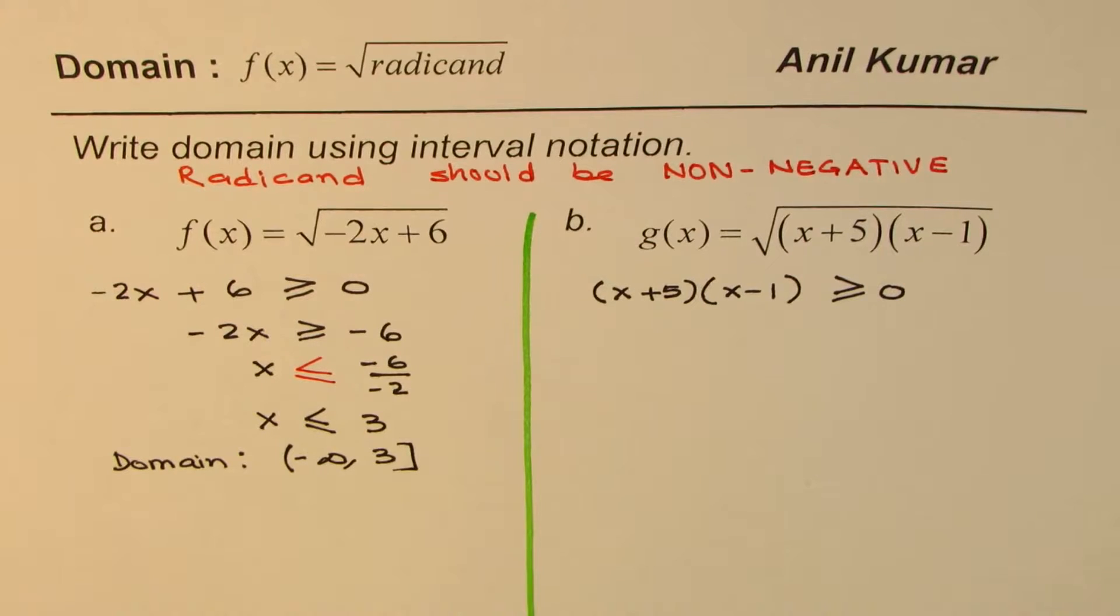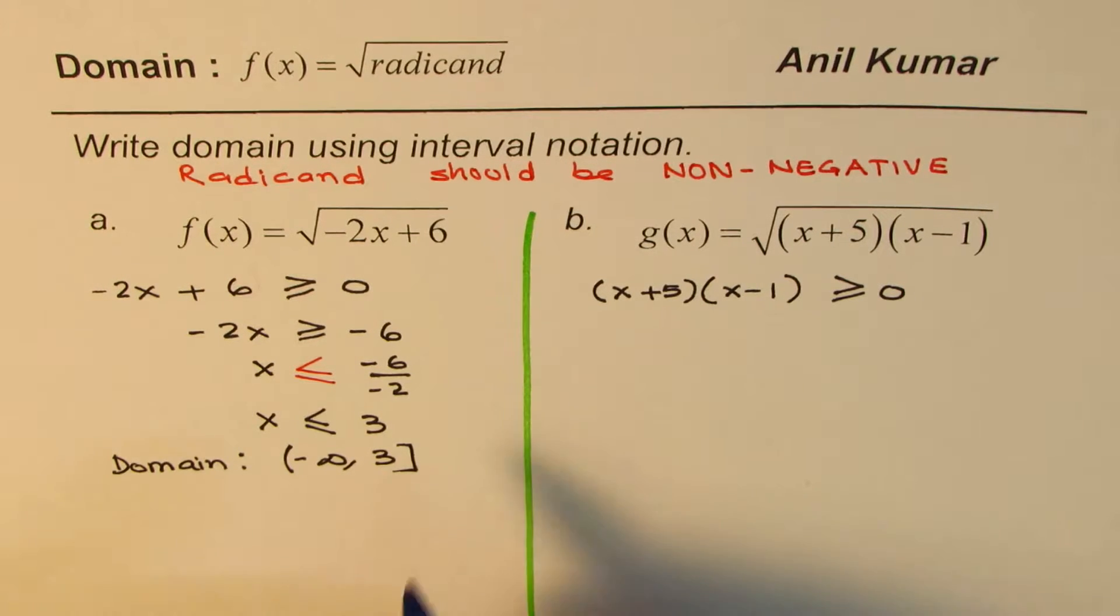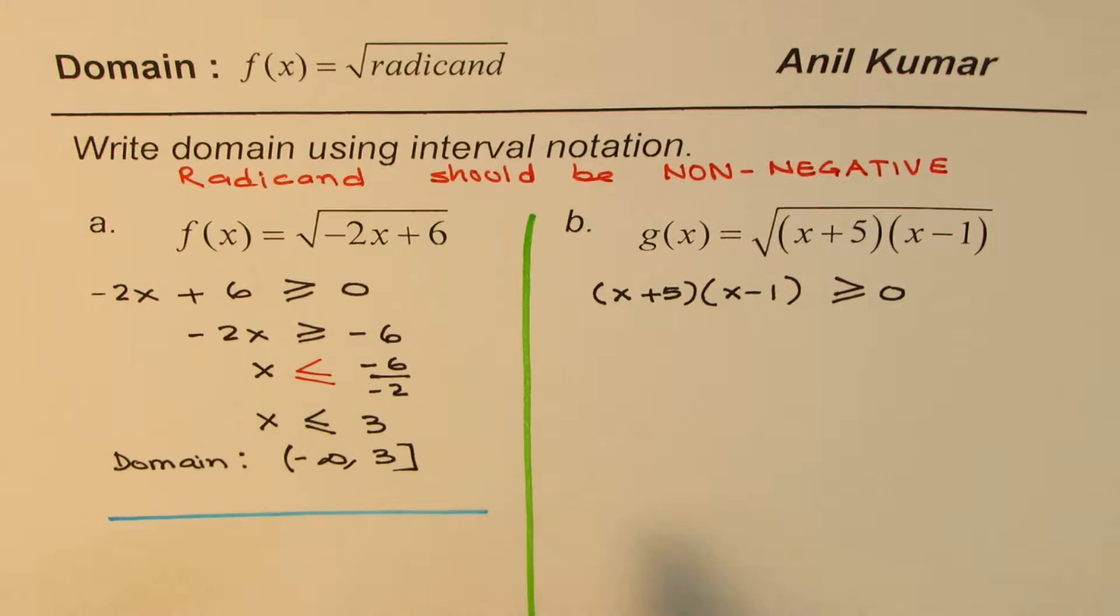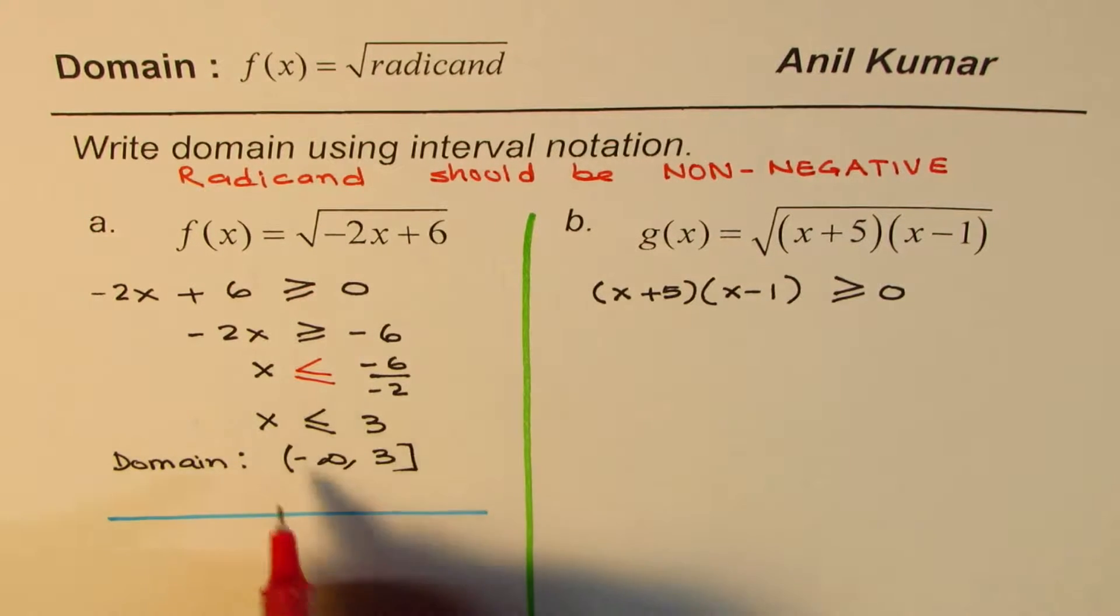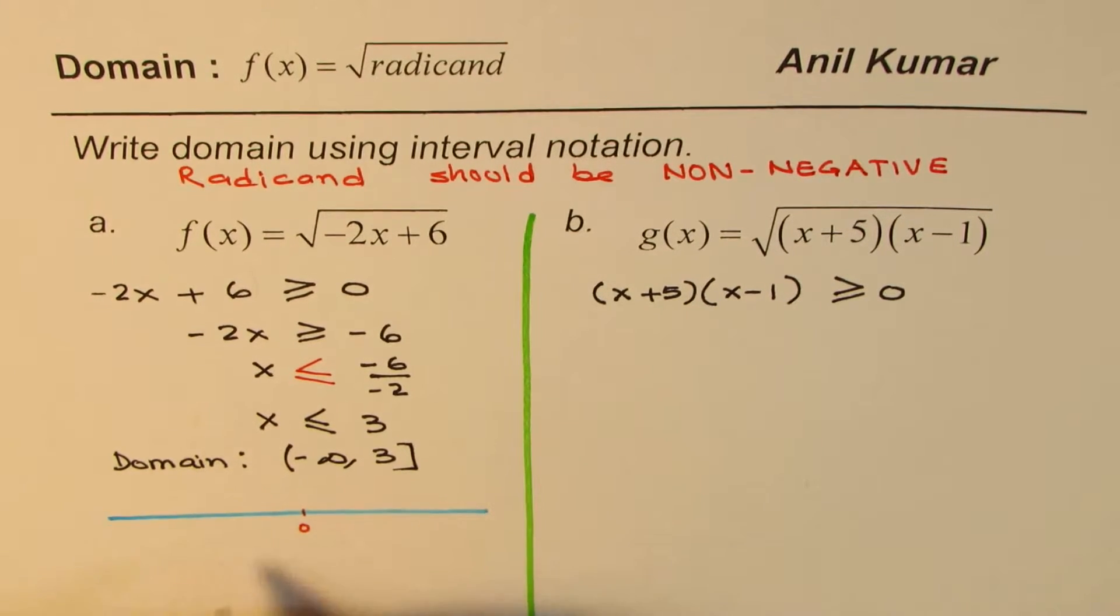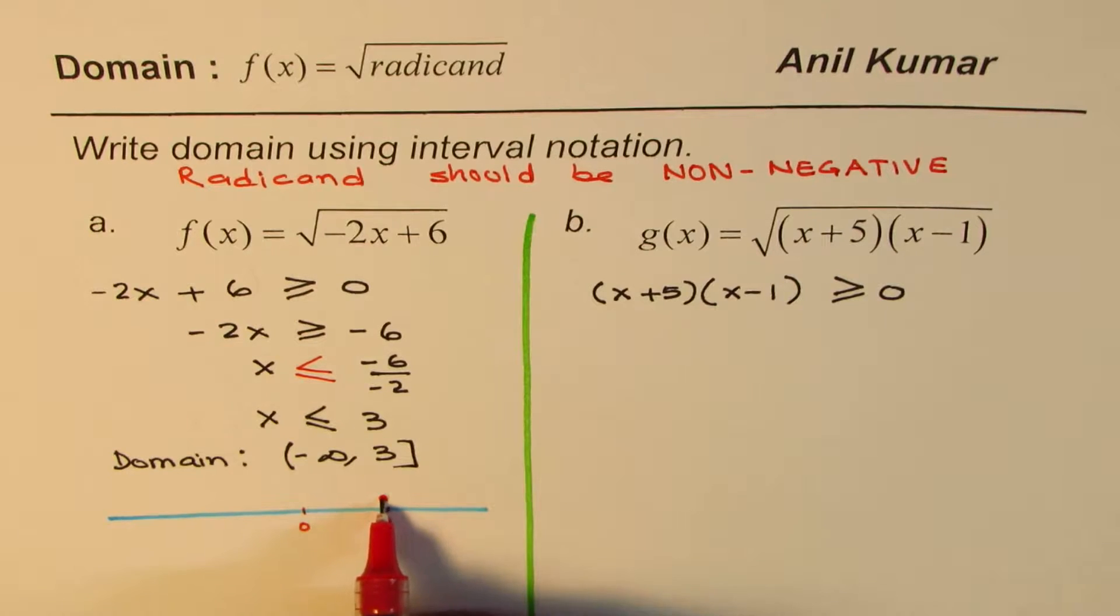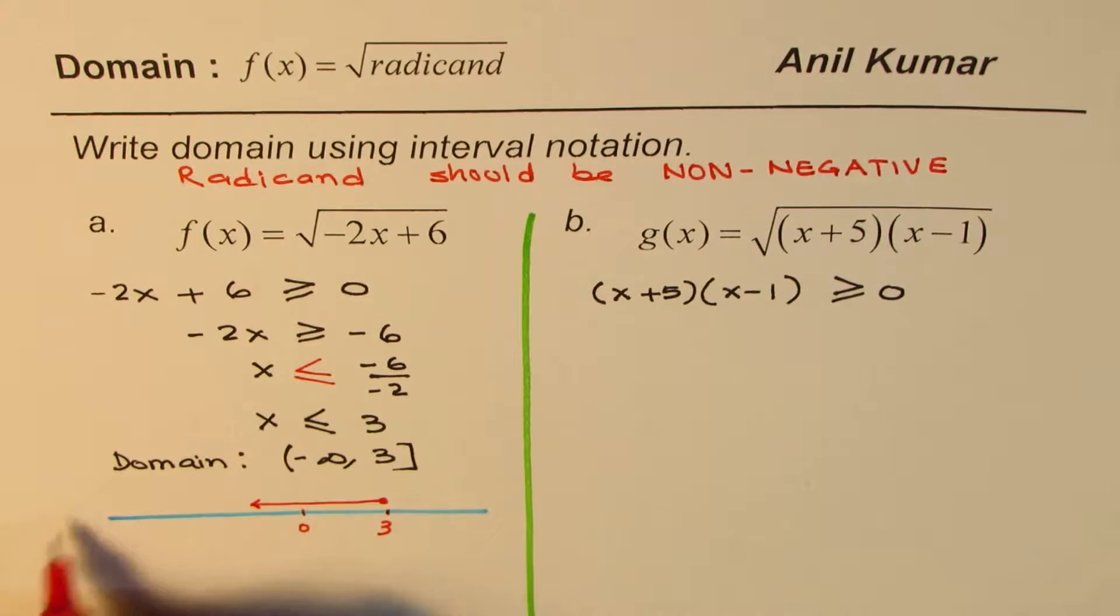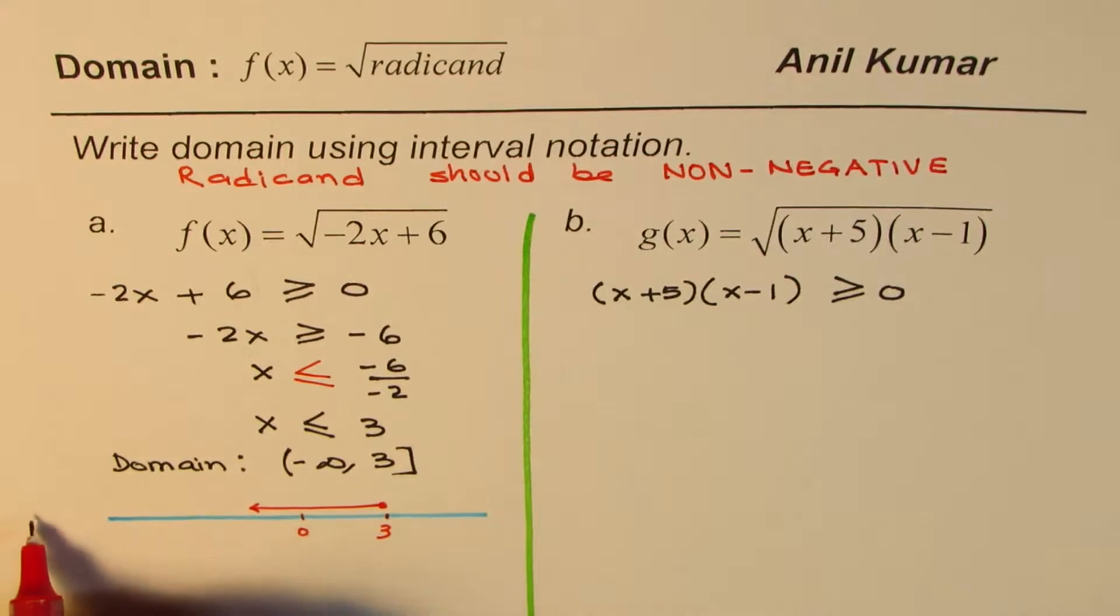There are many other ways of writing and representing this domain. One of them is number lines. Let me just put it here - this is 3 for me. 3 is included, so that means 3 is included and on this left side going up to -∞. You could represent this on a number line also.